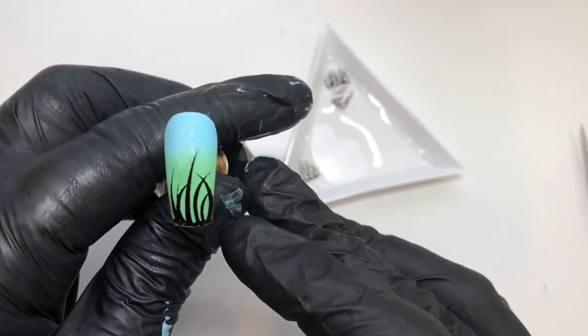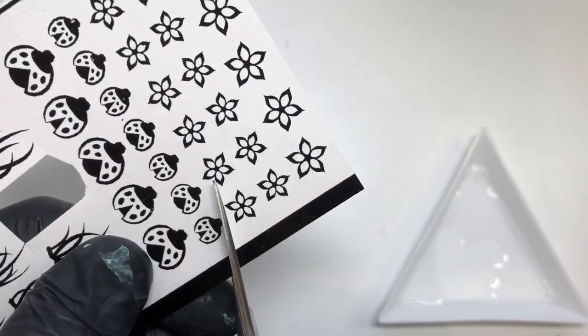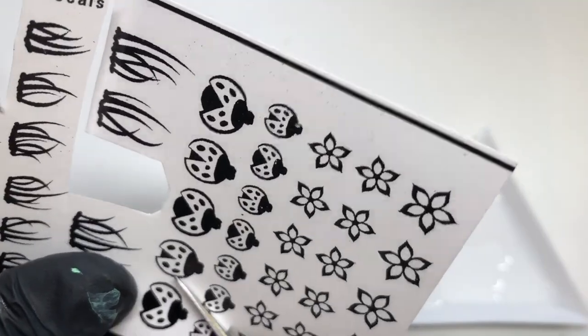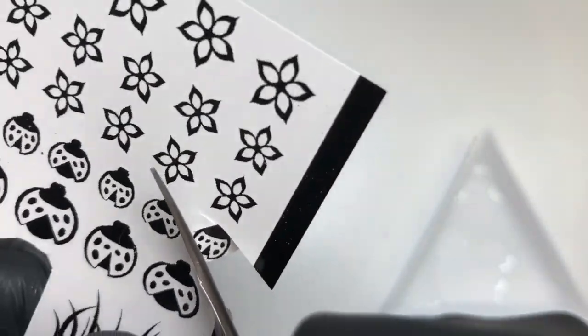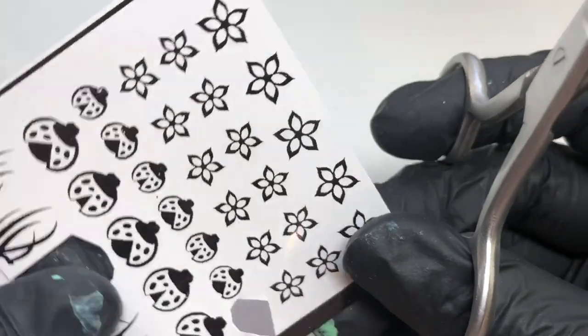If you are trying to put the water decal on and it keeps folding up like it's doing here, just add some more water and press it down firm with the cotton pads and it should stick.